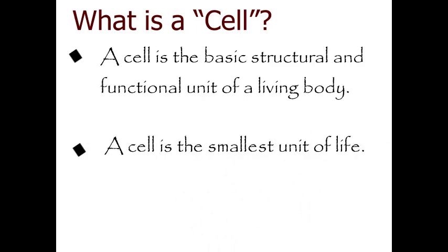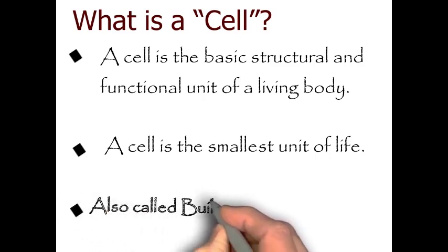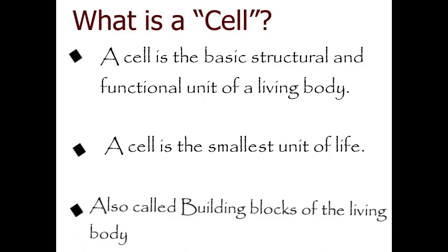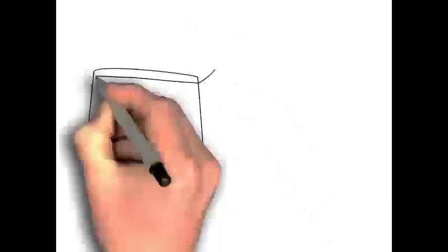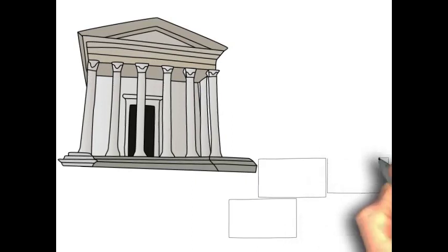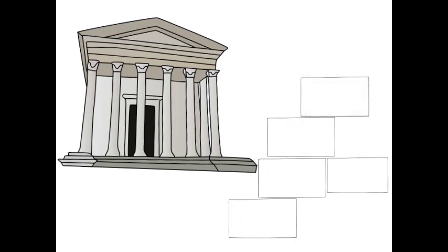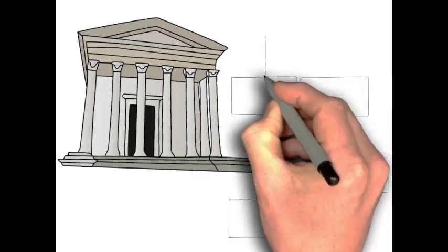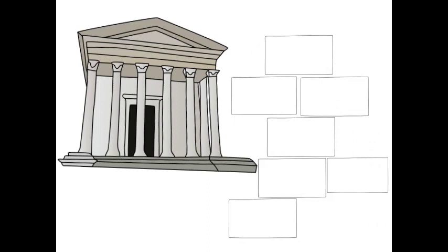Whatever life a living organism has is incomplete and impossible without the cell — that is why the cell is called the smallest unit of life; life cannot be created without it. The cell is also known as the building block of the living body. Just as building blocks are needed to construct any house — one block on top of another — similarly, cells come together to build a living body.